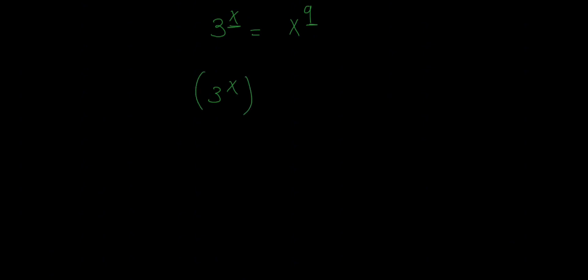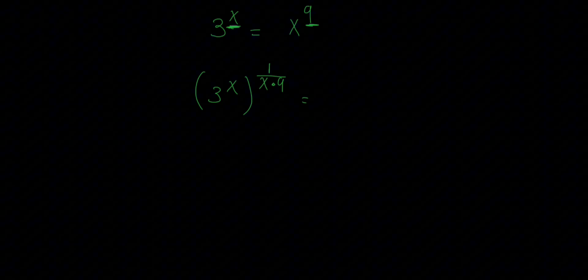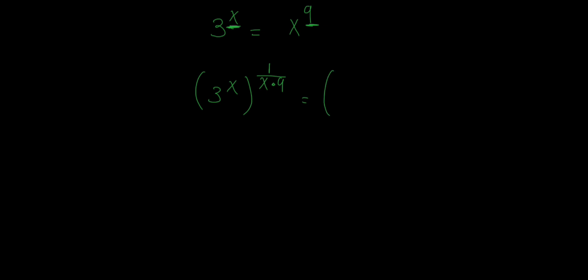...is to say 1 divided by x, the exponent of 3, and multiply by 9, the exponent of x. Because we're changing the other side of this equation, we must also change the other side of this equation.